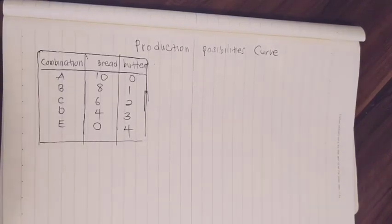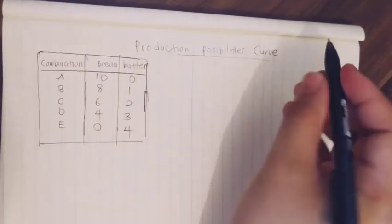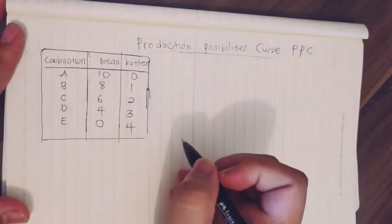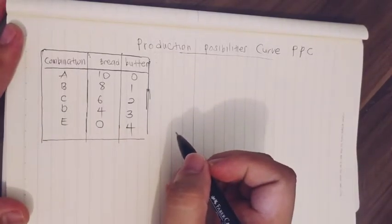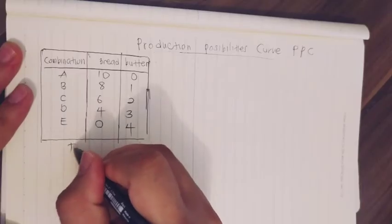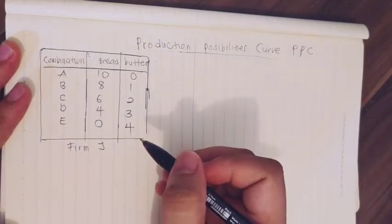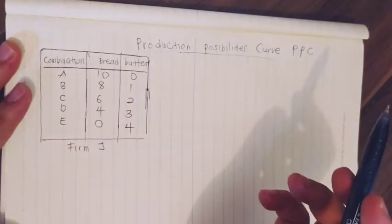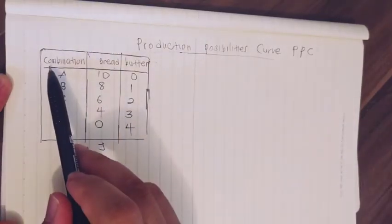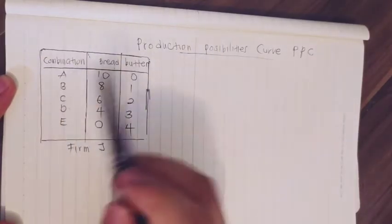Today we look into how to draw a Production Possibility Curve, or PPC. To draw the PPC, we need information regarding two goods. For example, this is the production for Firm J. Firm J wants to decide whether they want to produce bread, butter, or both. They have several options, known as possible combinations.